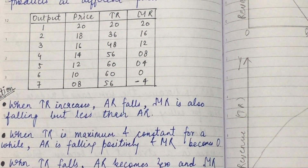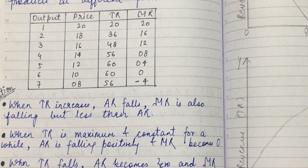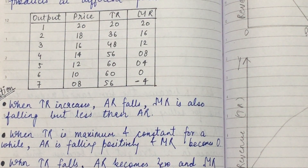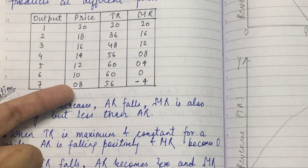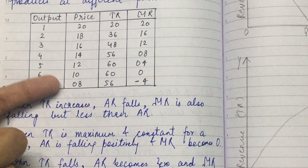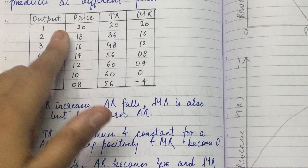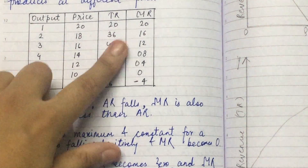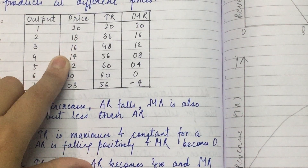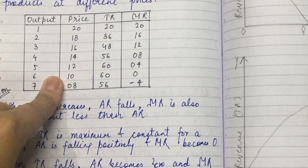In perfect competition there is always competition, so the price is the same — identical products, that is why the prices are the same. But imperfect is just the opposite: the products are completely different, someone is selling something different, and the prices are also different. The power to increase or decrease the price is completely in the hands of the sellers. So the price goes 20, 18, 16, 14, 12, 10, 8 — price is falling.